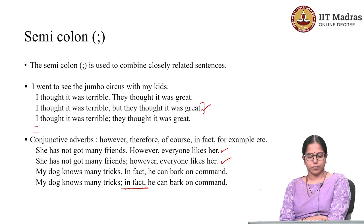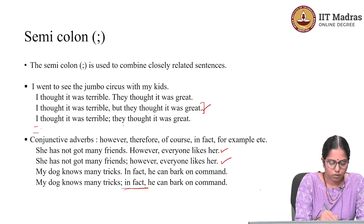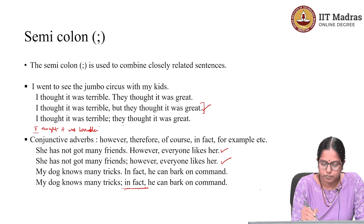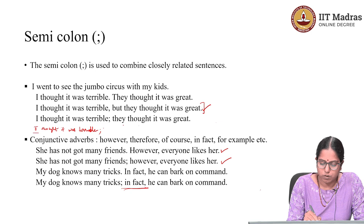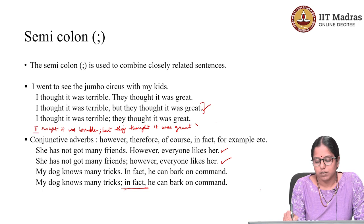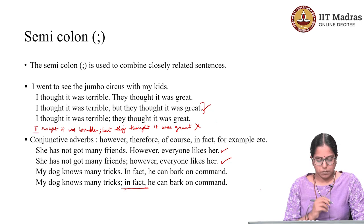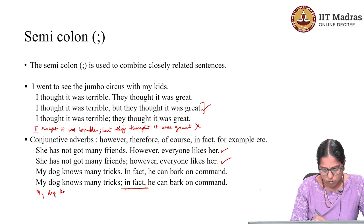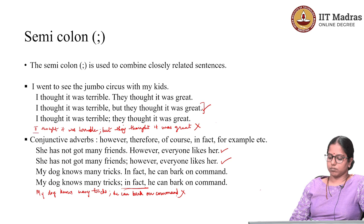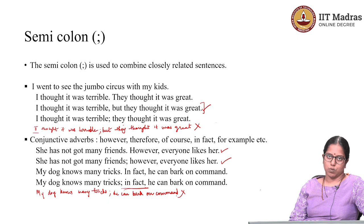You should not write something like 'I thought it was terrible semicolon but they thought it was great' — that is a wrong sentence. Similarly, you should not delete the conjunctive adverb. Because in this case, you have deleted the conjunctive adverb. You should be deleting a conjunction, not a conjunctive adverb. I hope I made that point clear.